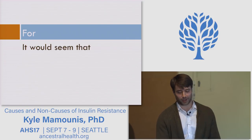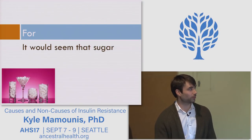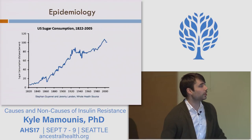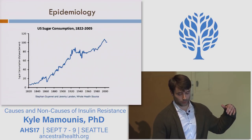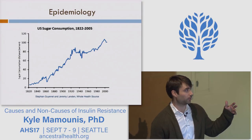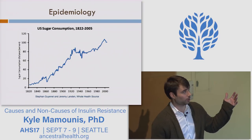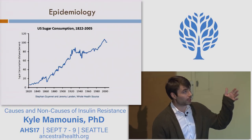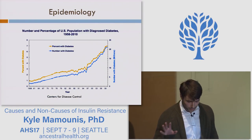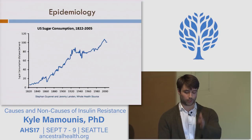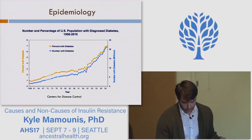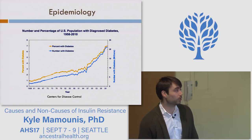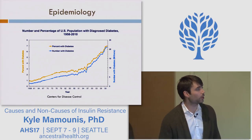So the for position: sugar causes insulin resistance. From a big picture perspective to a smaller picture — the epidemiology, taken from Stephan Guyenet's website, shows sugar consumption from 1822 to 2005. It went up a lot, basically the whole time. And alongside that, on a slightly different time scale starting from 1958 to 2009, you have diabetes diagnosis in the US population on a percentage and total number basis. These match up pretty well.